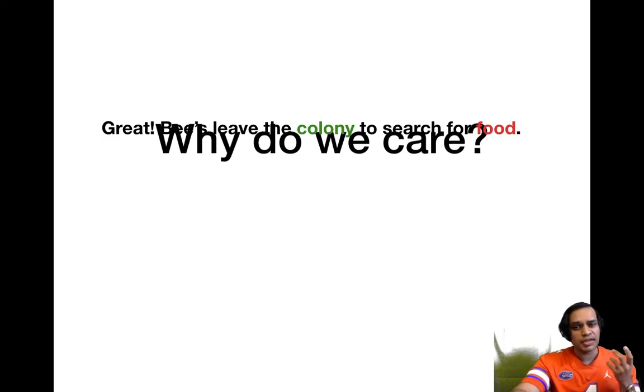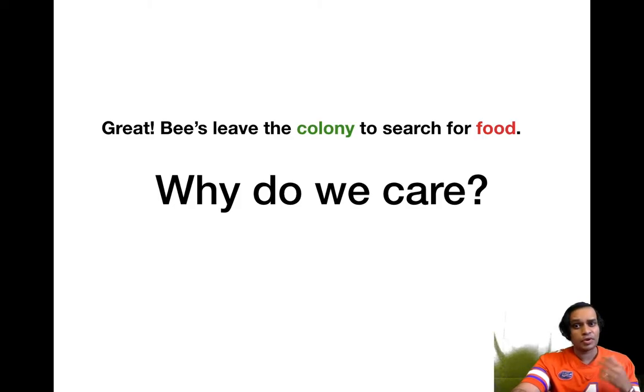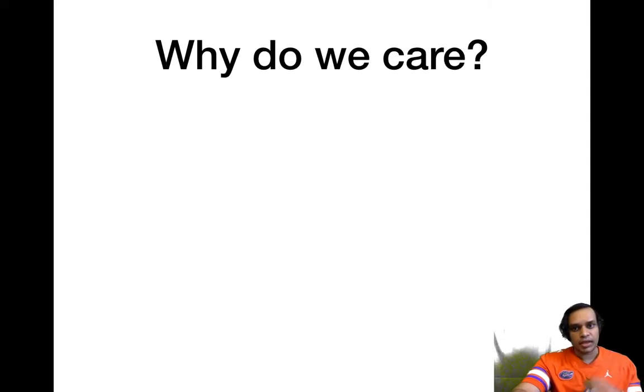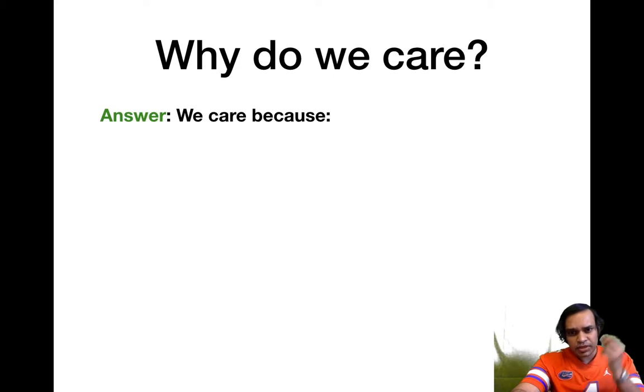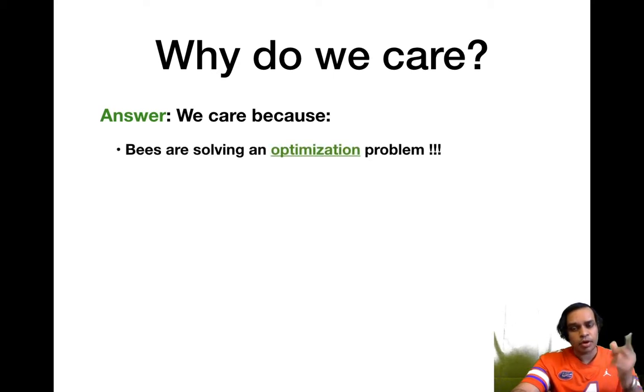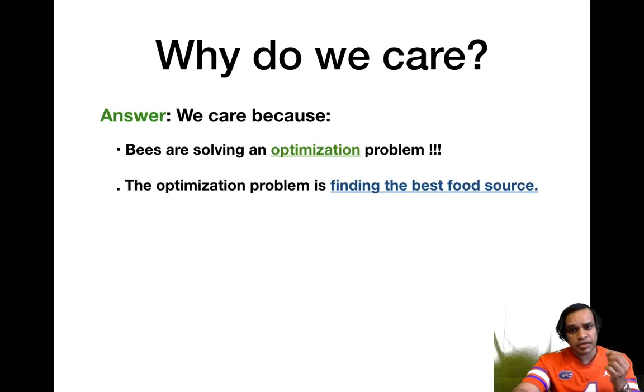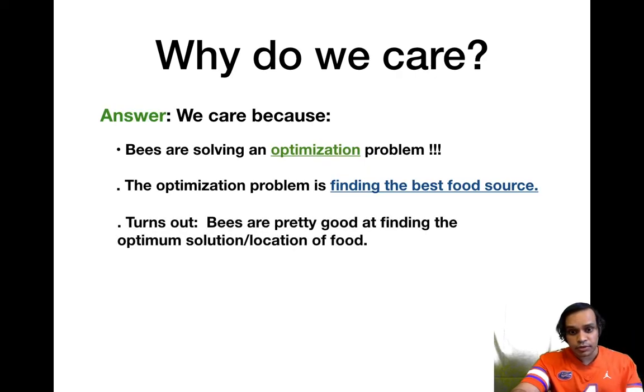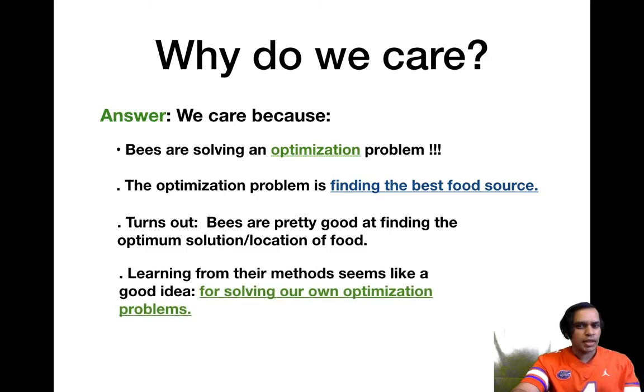So bees leave the colony to search for food, but why do we care about this? Why do we care what bees do? We care because our bees are tiny little bees solving an optimization problem. What is this optimization problem? They are trying to find the best source of food for the colony. It also turns out that our bees are really smart and able to find these optimal solutions really very well.